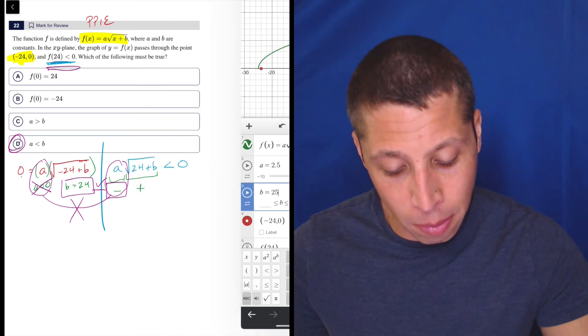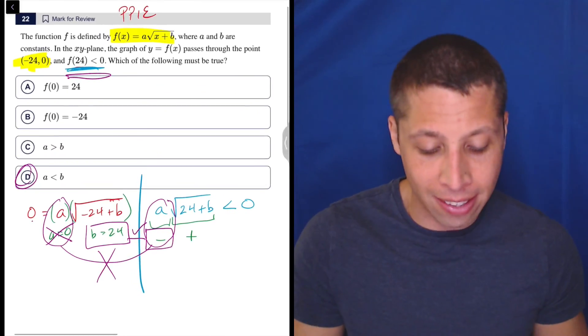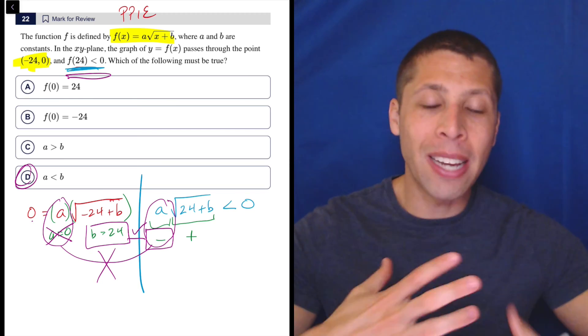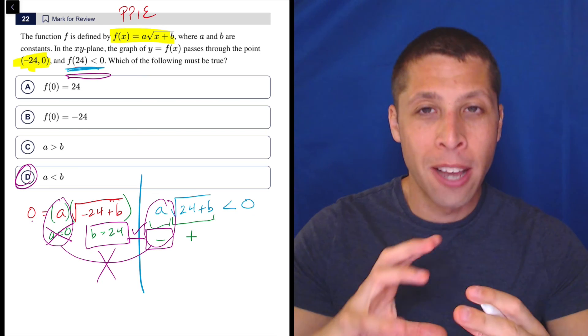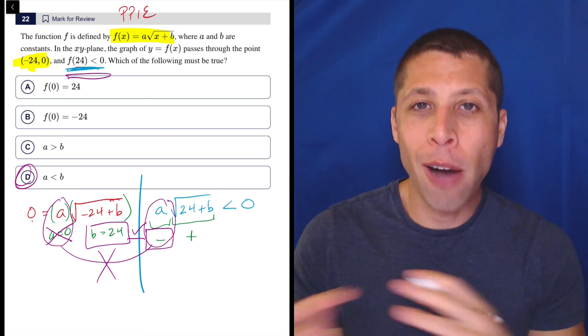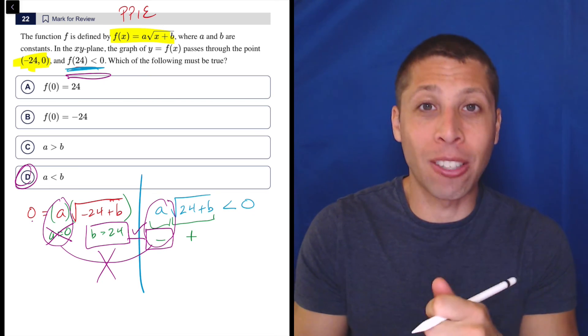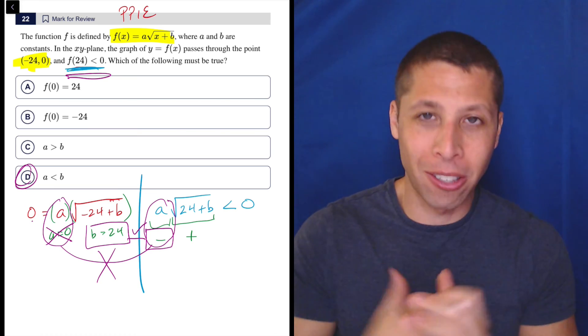And just plugging points into equations gave me those things. You will see questions like this. It is unlikely it will be exactly like this again. But this same idea is going to keep coming up on every digital SAT. You've got some weird equation. You're given these conditions. How can you kind of find like certain things that must be true based on those conditions?